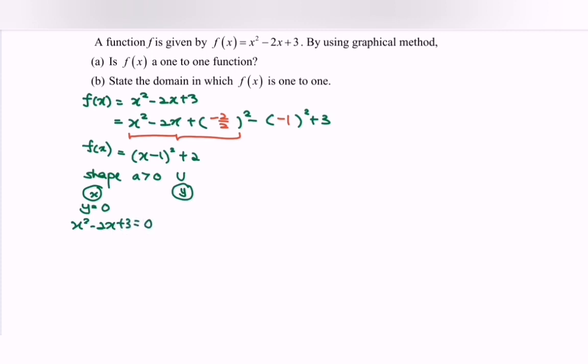By using the discriminant, we have b² - 4ac. So we have (-2)² - 4(1)(3). If we substitute, we have 4 - 12, which means -8, less than 0. So b² - 4ac < 0 means no real root for this case.